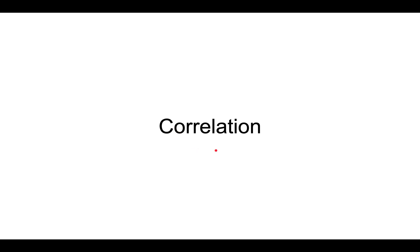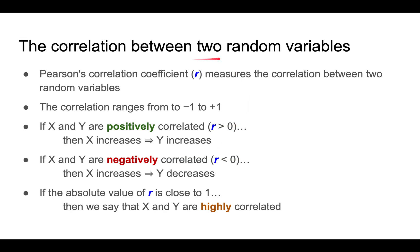So let's talk first about correlation. When you have two random variables, you can calculate what is called the correlation coefficient, which is often denoted by the letter R, which measures how these two variables are correlated.